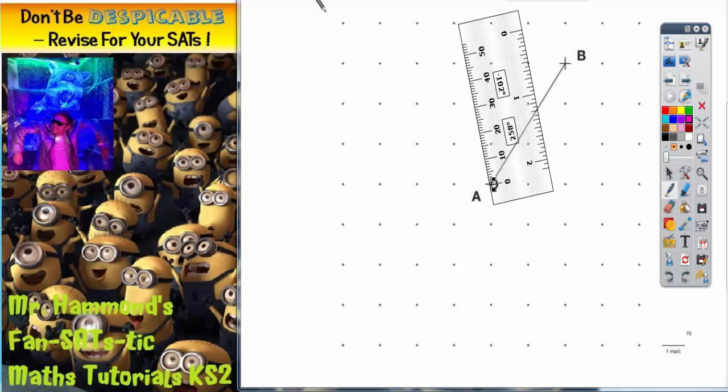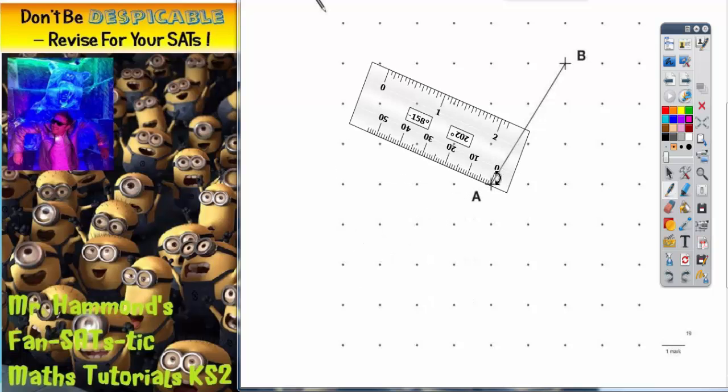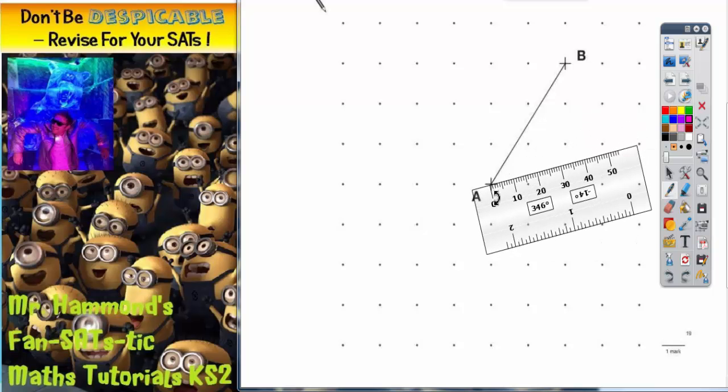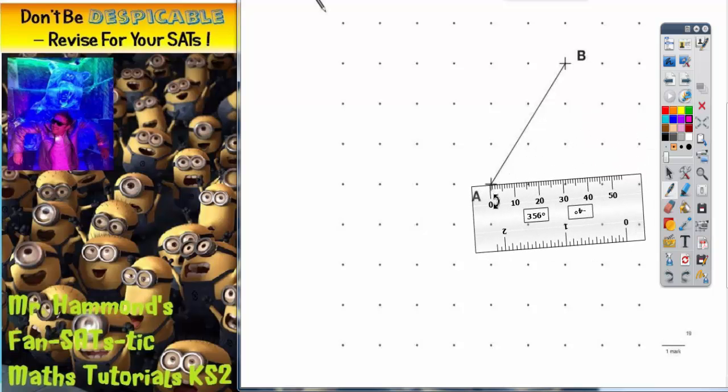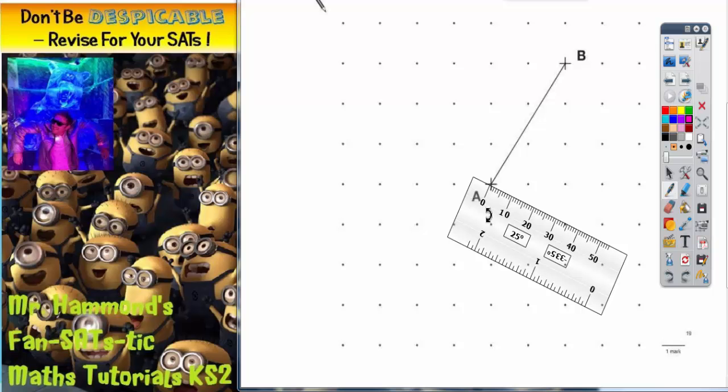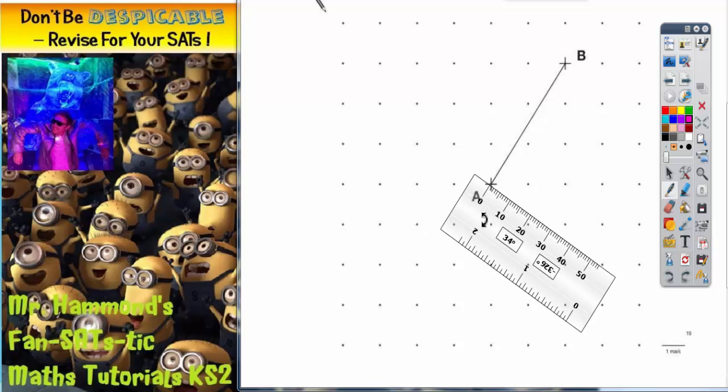So you can see at the moment that is a very small angle. Make it a bit bigger, a bit bigger, a bit bigger. Keep going until you get to a right angle. So we're approaching a right angle now and stop.